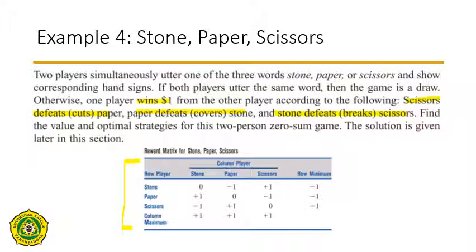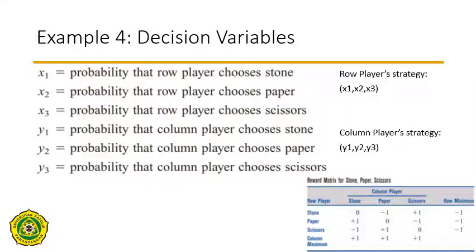You may notice that in this game there is no saddle point. Since there is no saddle point, both players must play randomized strategies to maximize the reward from the game. For the row player, the strategy is denoted by x1 up to x3, where x1 means the probability that the row player chooses stone, and so on.